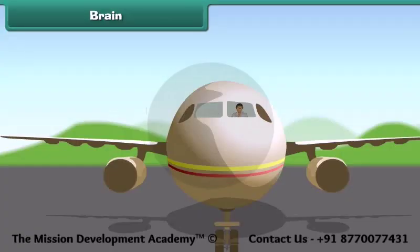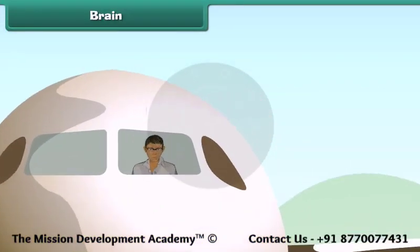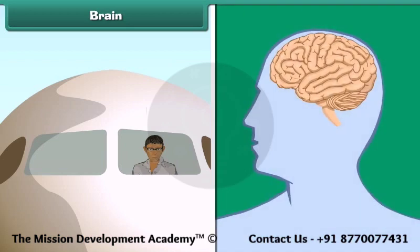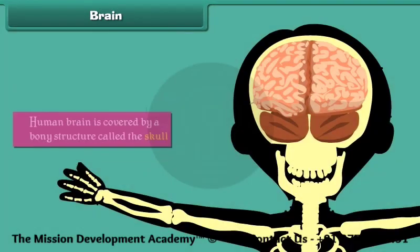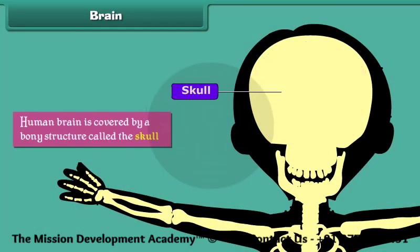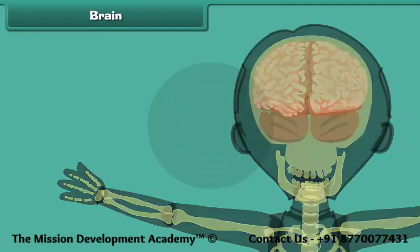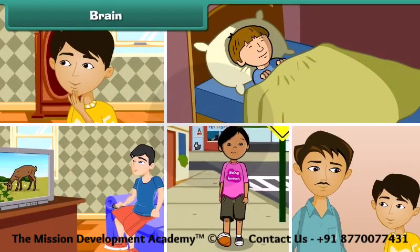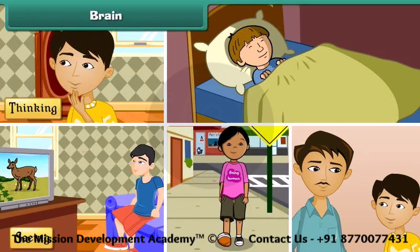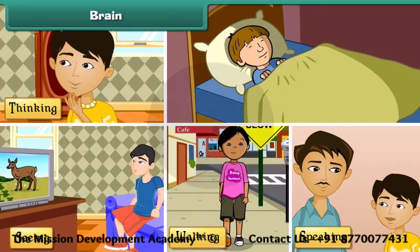Brain. Just as the pilot is the boss of an aeroplane in flight, the human brain is the boss of the human body. The human brain is covered by a bony structure called the skull. The brain controls all the activities of the human body such as thinking, seeing, walking, speaking, and even sleeping.